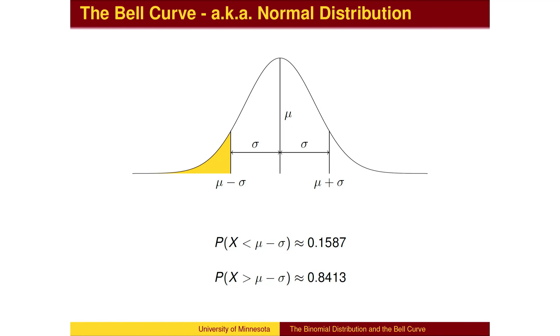By symmetry, 15.87% of the population falls below mu minus the standard deviation.